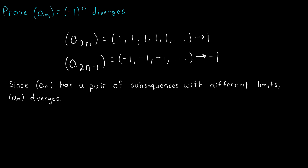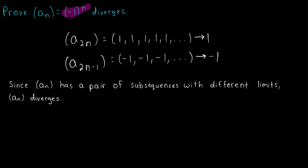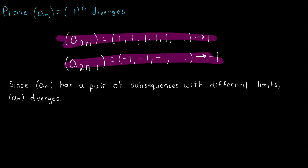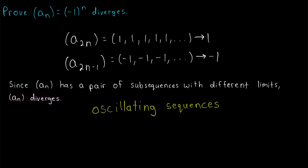It's as easy as that — much easier than the contradiction proof we originally used. Make sure you understand why this is sufficient to prove divergence: if negative 1 to the n did converge, then all of its subsequences would converge to the same limit. Since we found two subsequences that converge to different limits, we know that's not possible, and so the sequence diverges. It's worth noting this strategy is useful only for oscillating sequences. For a sequence that diverges to positive or negative infinity, all of its subsequences will do the same, so you won't find subsequences with different limits in those cases.